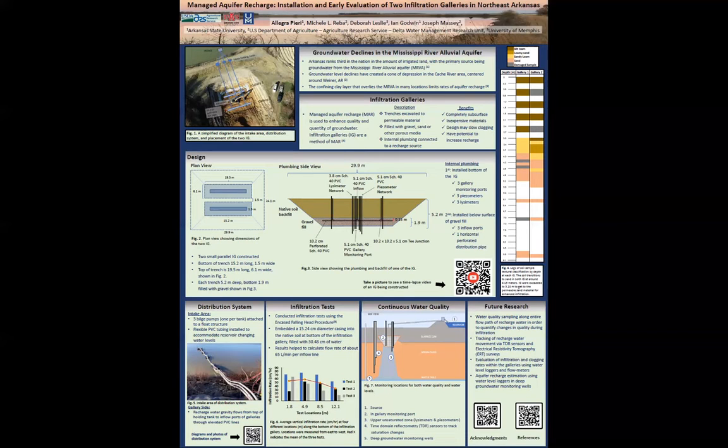Figure 4 displays the results of the soil texture analysis from soil samples collected at different depths during excavation. At around 3.9 to 5.2 meters, soil texture turns to permeable sand, which is why we positioned the bottom of the galleries to be 5.2 meters deep for enhanced infiltration.